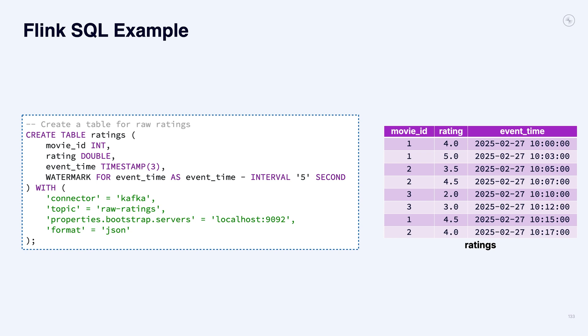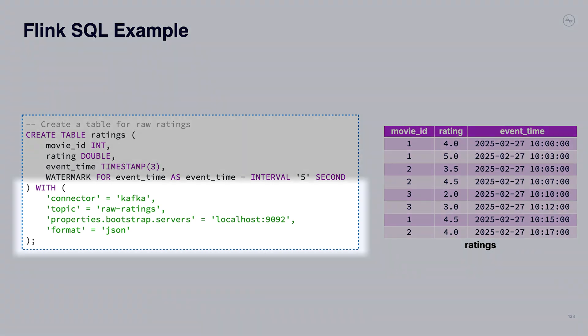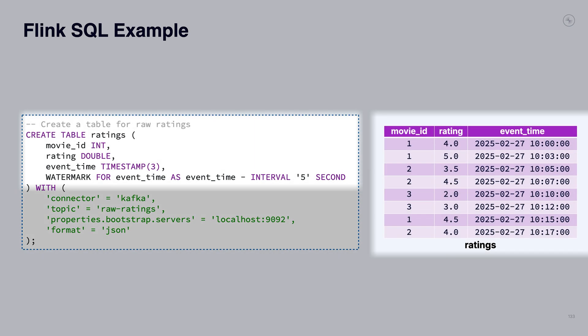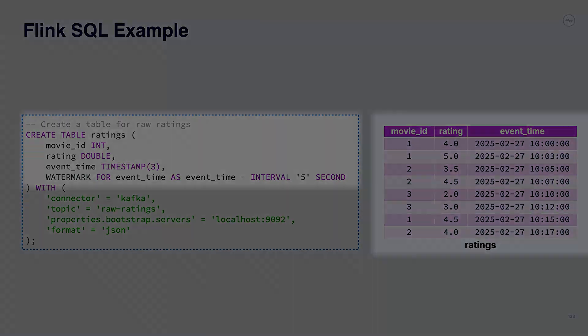Let's look at some Flink SQL with a quick example. We've got a topic — you can see towards the bottom there — with connector equals Kafka, topic equals raw_ratings. So there's a Kafka topic called raw_ratings that's got movie ratings in it. Someone deployed an app where people can rate movies live and those are streaming in. We're going to make a table out of that — it's got a movie ID, a rating, and a time.